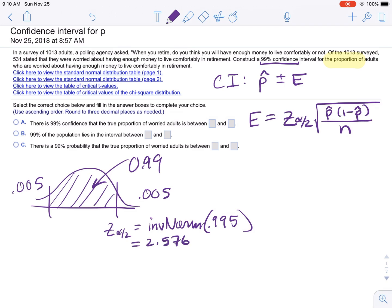So it's 2.576. 2.576. Now, all we need to do is get P-hat. P-hat is 531 over 1013.